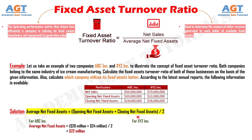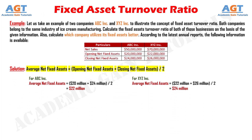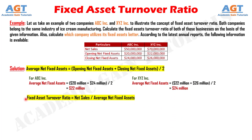For company XYZ, average net fixed assets equals opening net fixed assets of $22 million plus closing net fixed assets of $26 million divided by 2, which gives an average net fixed assets of $24 million. Now, the fixed asset turnover ratio for company ABC equals net sales of $50 million divided by average net fixed assets of $22 million.